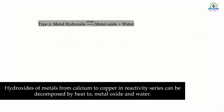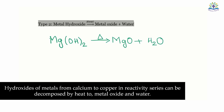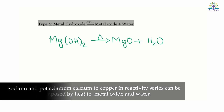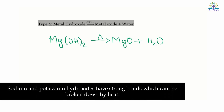Hydroxides of metals from calcium to copper in the reactivity series can be decomposed by heat to give metal oxide and water. For example, magnesium hydroxide decomposes to form magnesium oxide and water. Sodium and potassium hydroxides have strong bonds which cannot be broken down by heat.